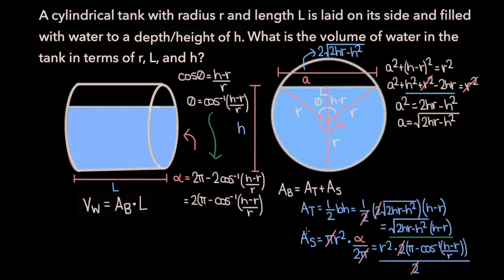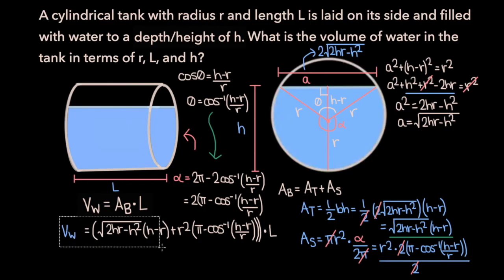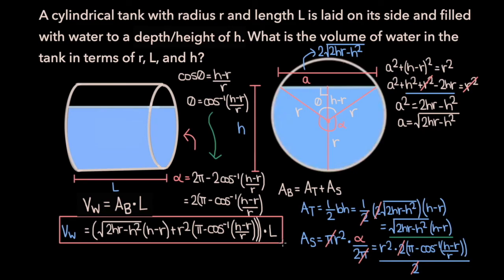Now we know the area of the triangle and the area of the sector, so we can put everything together for the volume of water in a horizontal cylindrical tank. The volume equals the area of the base times l, where the area of the base is the area of the triangle plus the area of the sector: the square root of 2hr minus h squared times (h minus r), plus r squared times (pi minus the arc cosine of (h minus r) over r), all multiplied by l. Here r is the radius, l is the length, and h is the depth of water.